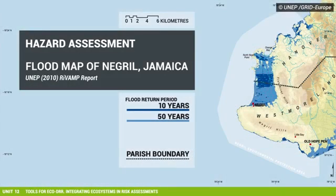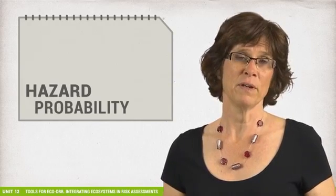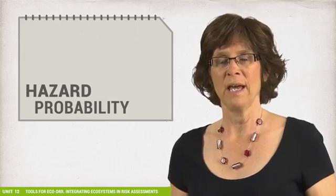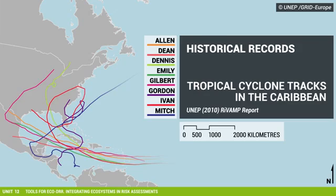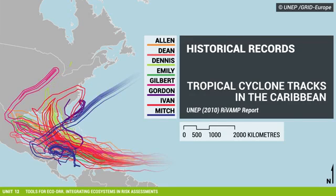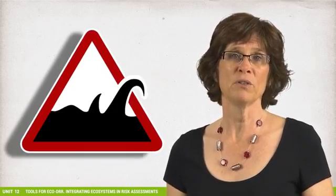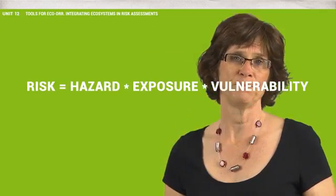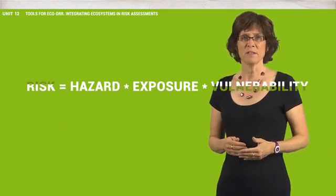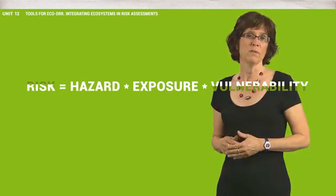Natural or physical scientists might consider vulnerability to be the physical damage of a house or of a landscape to a certain hazard. Hazard assessments are usually more standardized than vulnerability assessments. We identify two types of data for hazards: the probability of an event reoccurring, or its return period, and the intensity of the hazard. For these data we need historical records as well as climate forecasts. Where several hazards are present, it is useful to develop a multi-hazard map, which provides a more comprehensive overview of all hazards.